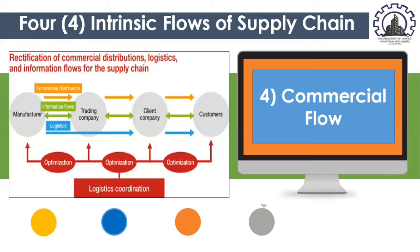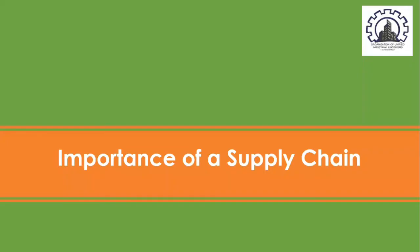This transactional supply chain can only take place if there is more than one company. Within a single organization, there will be material flow but no ownership change, and hence no commercial flow. This ends our discussion on the first key area, which is the basic concepts of supply chain.